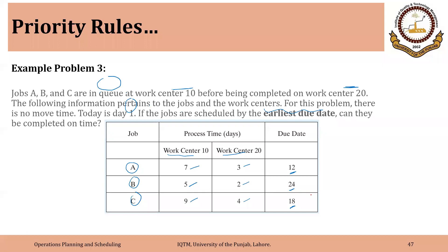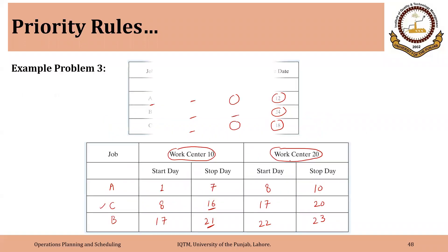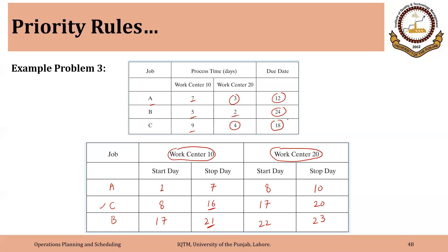The question was: can the jobs be completed on time? The due dates are 12, 24, and 18. Job A had a due date of 12 and will be finished by day 10 — so it is on time. For job C, the due date was 18 and it will end by day 20, so it is late by two days. For job B, the due date is 24 and it is completed on day 23 — so it is on time.